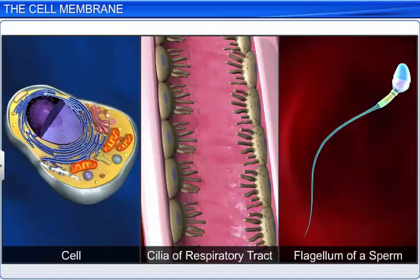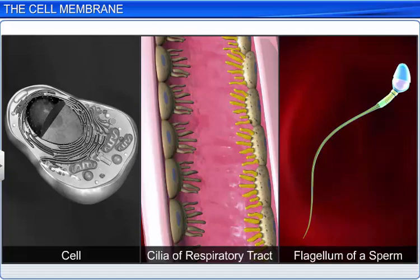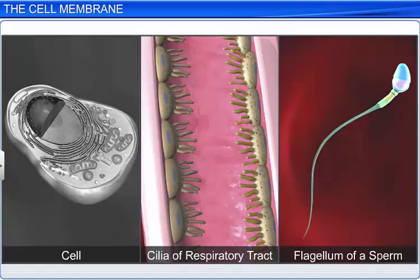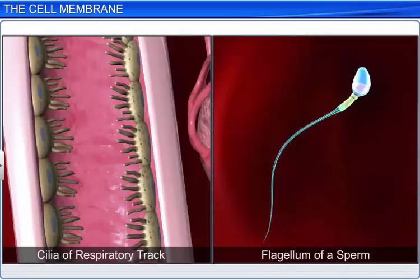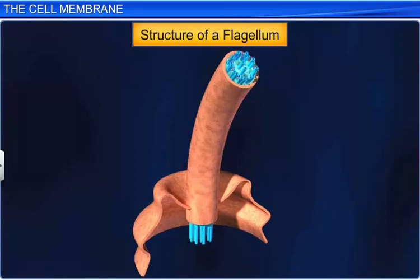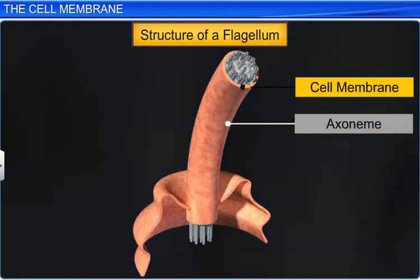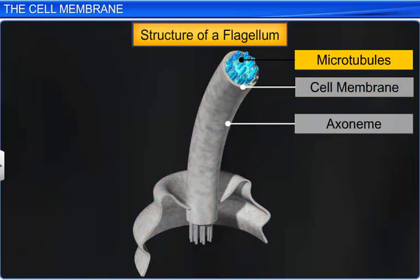The cell membrane, which helps in the transport of substances, is also a part of the cilia and flagella, hair-like structures that project from the cell's surface. These structures emerge from centriole-like structures called basal bodies and share a similar structure, though cilia are smaller than flagella. Their core, called the axoneme, is covered by the cell membrane and has numerous microtubules running parallel to its axis.